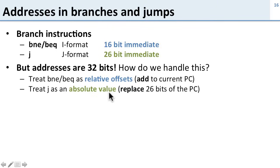For the jump instruction, we treat the constant as an absolute value — we just replace a whole bunch of the bits in the current program counter with those 26 bits.